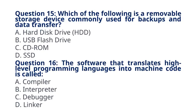Question 15: Which of the following is a removable storage device commonly used for backups and data transfer? A. Hard disk drive (HDD), B. USB flash drive, C. CD-ROM, D. SSD. The correct answer to question 15 is option B: USB flash drive. Explanation: USB flash drives are portable and commonly used for data transfer and backups.